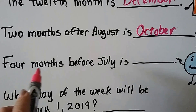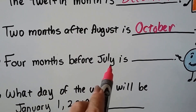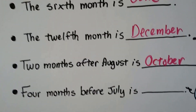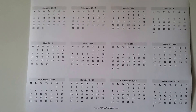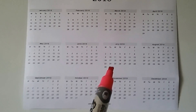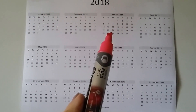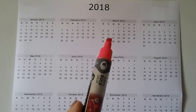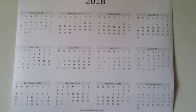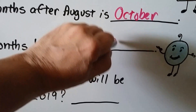What's four months before July? Four months before July — where is July? Here it is. Let's count four months before it: one, two, three, four — it would be March. March is four months before July.